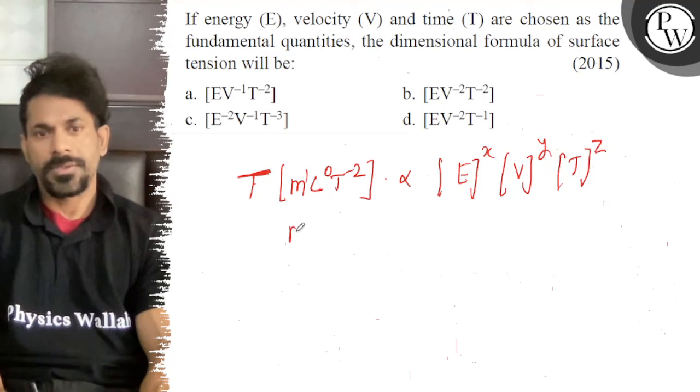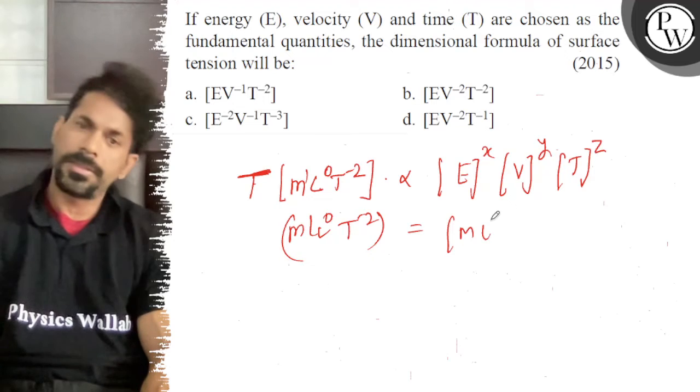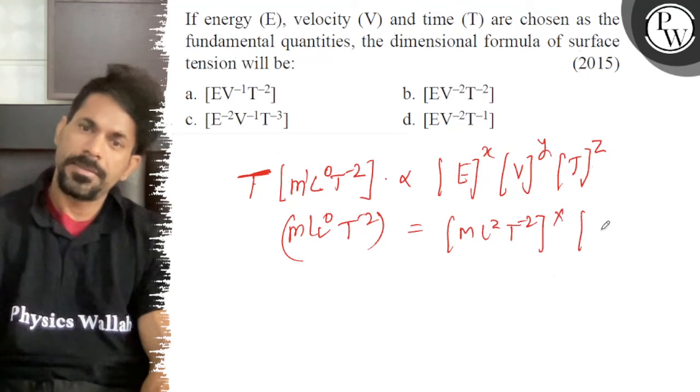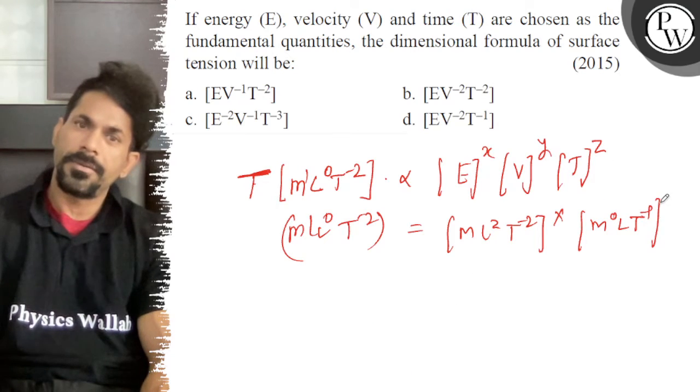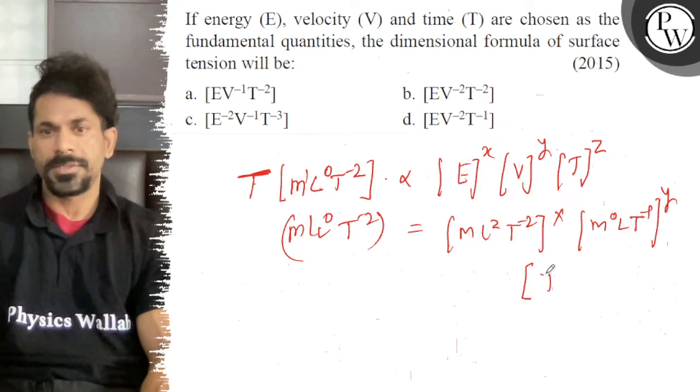So, that is your ML^0T^-2, that is equal to MLT^-2 power of x, M^0LT^-1 power of y, and T is time, that is T power of z.